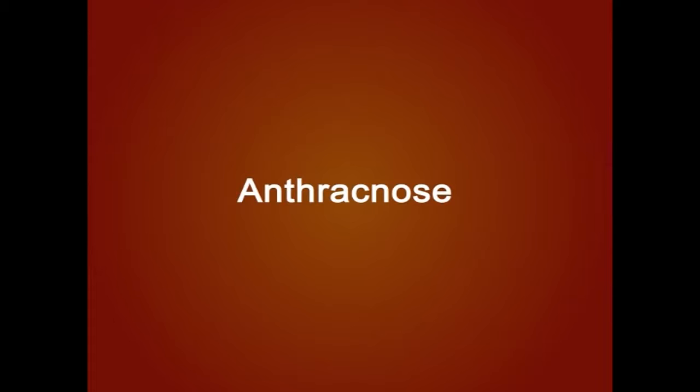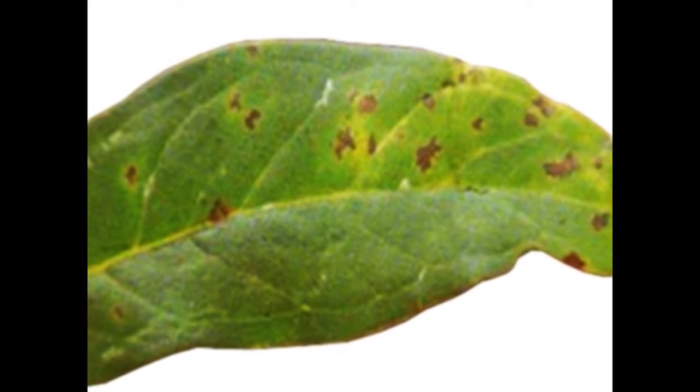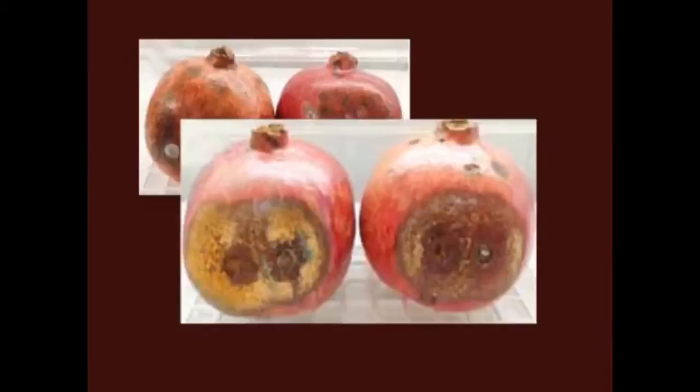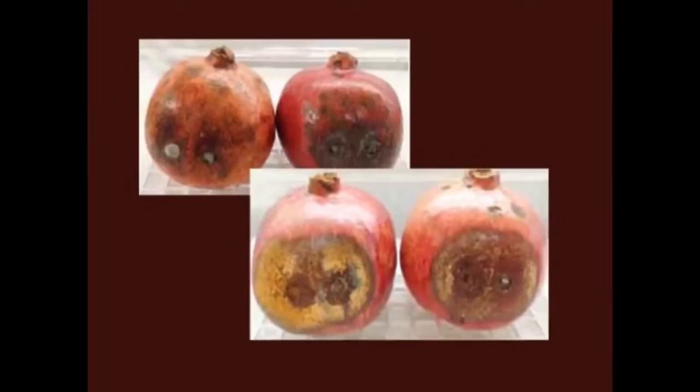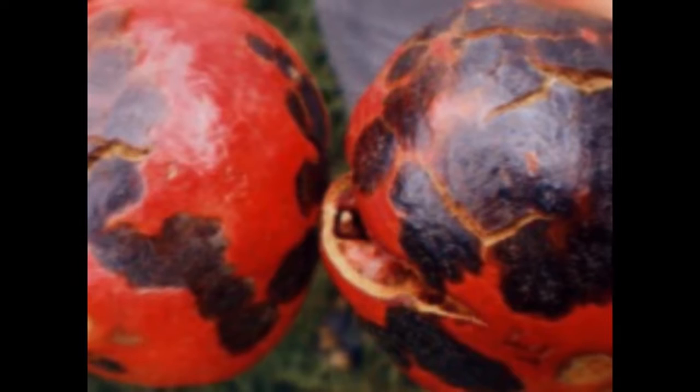Next disease is Anthracnose, caused by Colletotrichum gloeosporioides. Symptoms appear as small regular or irregular dull violet or black leaf spots with yellowish halos. Leaves turn yellow and fall off. Symptoms appear on flowers also. Both tender and mature fruits develop spots which are initially circular, later becoming irregular brown to dark brown, covering the fruit partly or wholly with sunken centers. Diseased portions bear minute black dots representing acervuli.